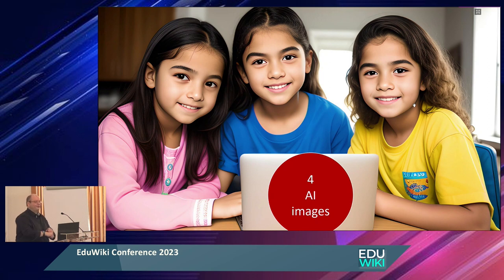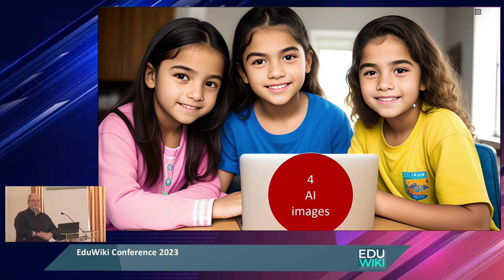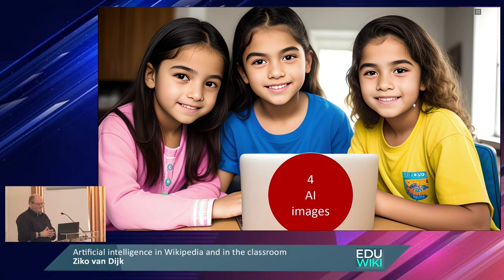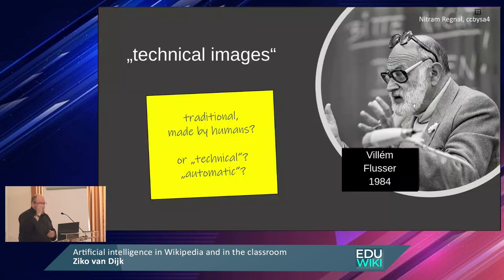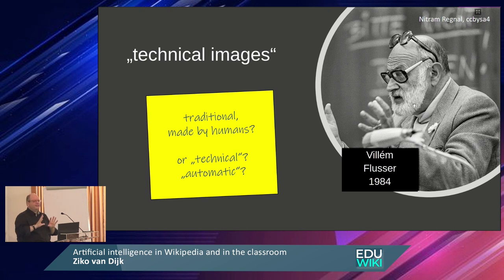We have time for discussions or we have time for AI images — it's your choice. AI images. I'm a historian, I'm not much about theory, but there's this Flusser guy. He had a whole theory and I'm just summarizing it. There are two different things: an image can be made traditionally by humans, or it is technical or automatic.